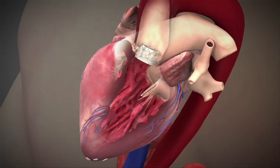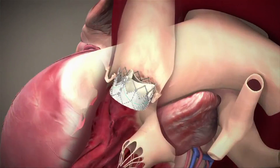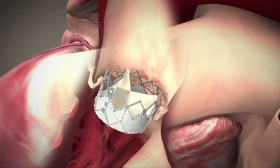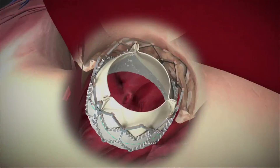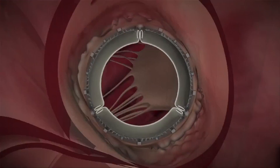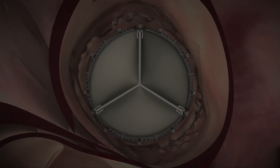The valve is assessed to make sure it is working well with no blockage to the coronary arteries, no leak causing aortic regurgitation around the valve ring, and no injury to nearby structures.